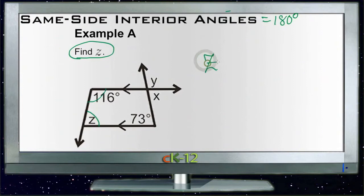So if we say that Z plus 116 equals 180, then we just need to subtract 116 from both sides and we get Z equals 64.